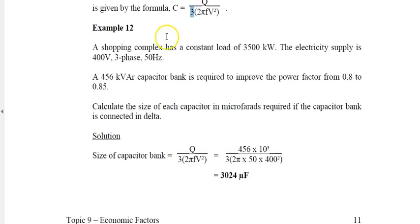Example 12: A shopping complex has a constant load of 3500 kilowatt. The electricity supply is 400V, 3-phase, 50 hertz. A 456 kVAR capacitor bank is required to improve the power factor from 0.8 to 0.85. Calculate the size of each capacitor in microfarads required if the capacitor bank is connected in delta. For delta, we use the formula: size of capacitor bank equals Q over 3 times 2 pi F V squared, which is 456 times 10 to the power of 3 divided by 3 times 2 pi times 50 times 400 squared. That gives 3024 microfarad.